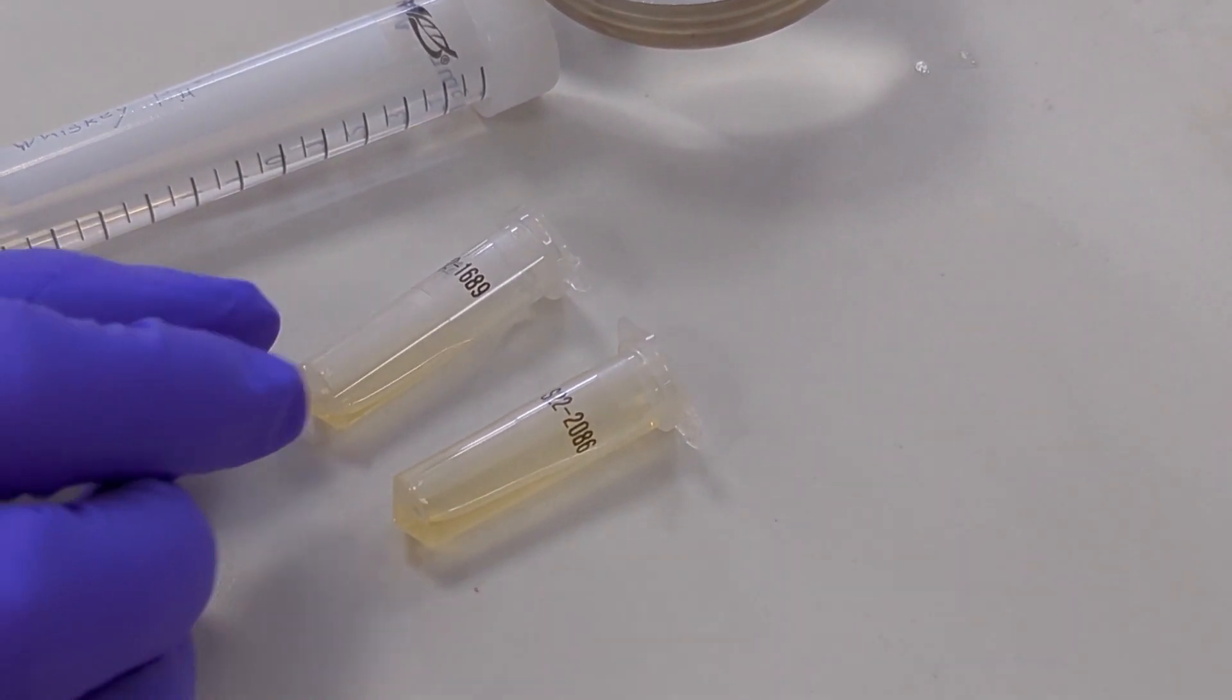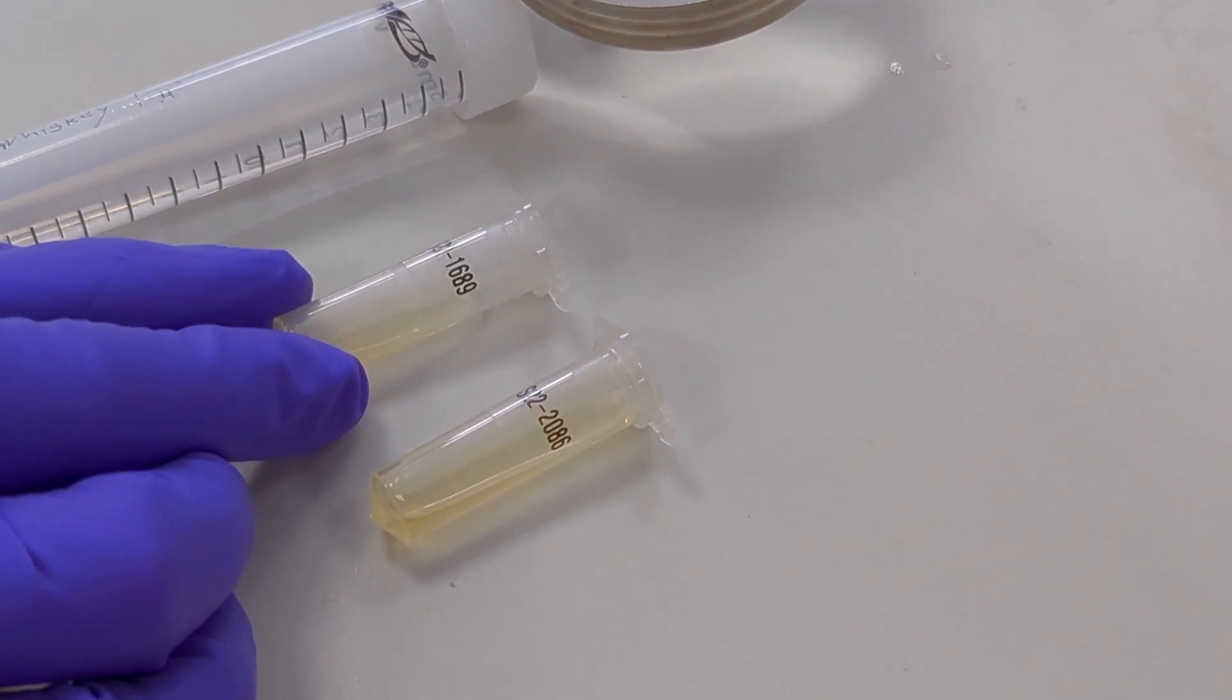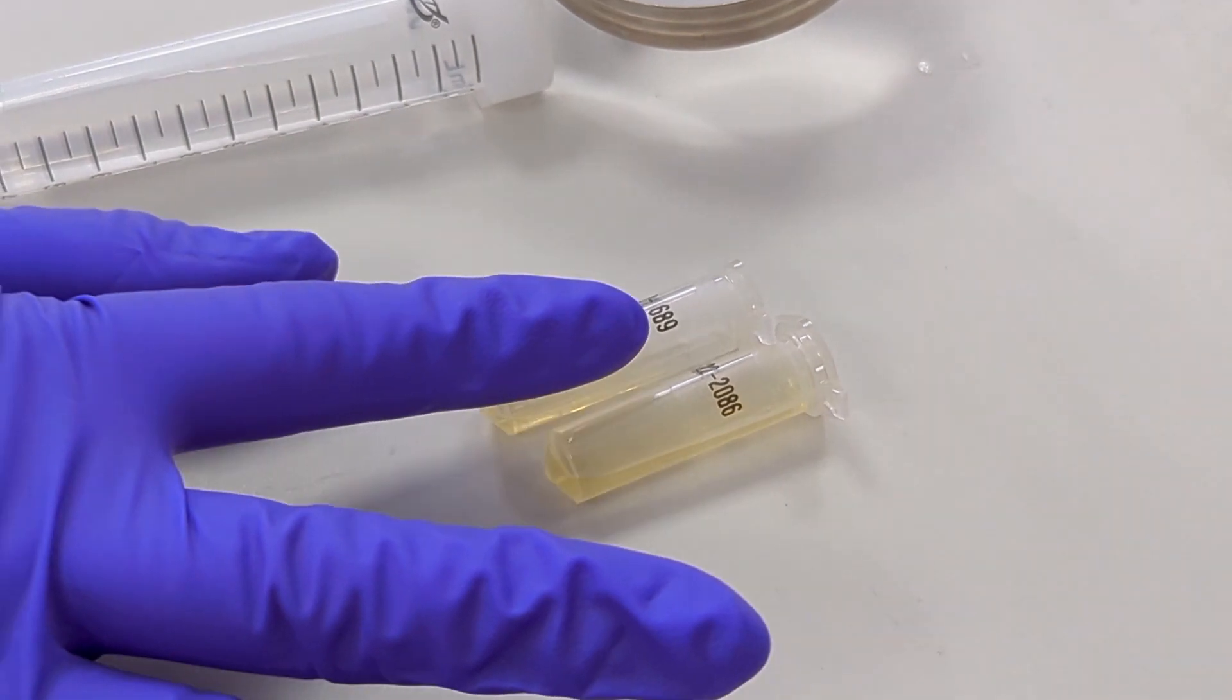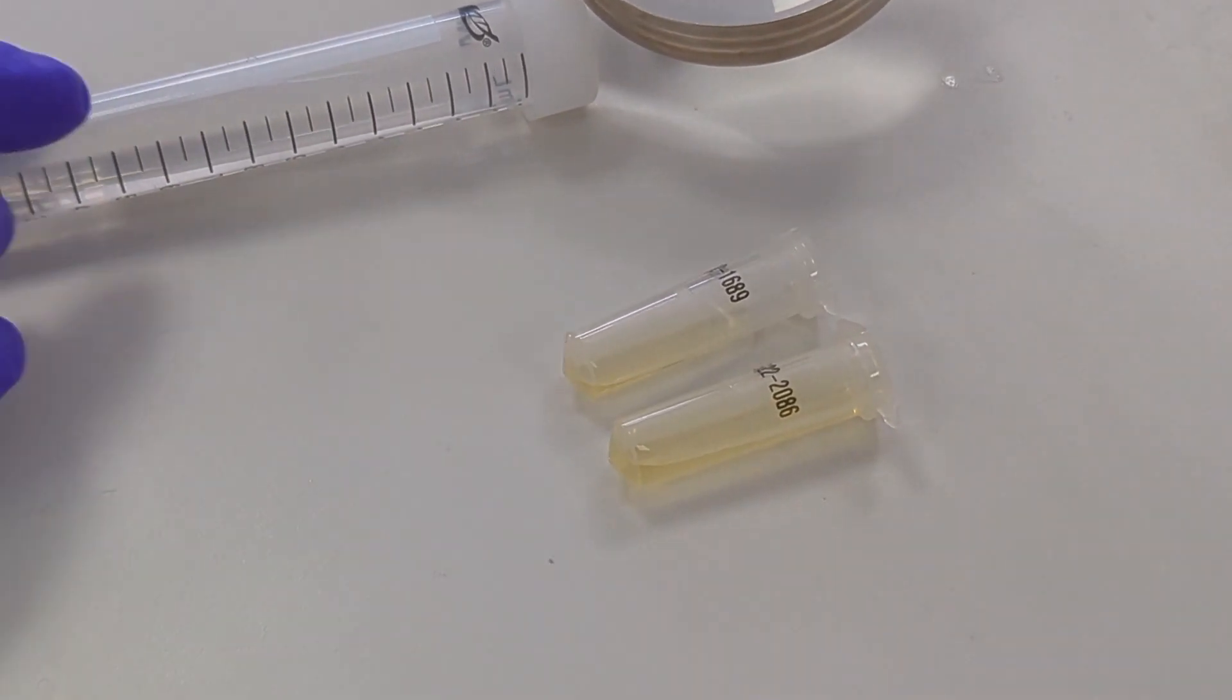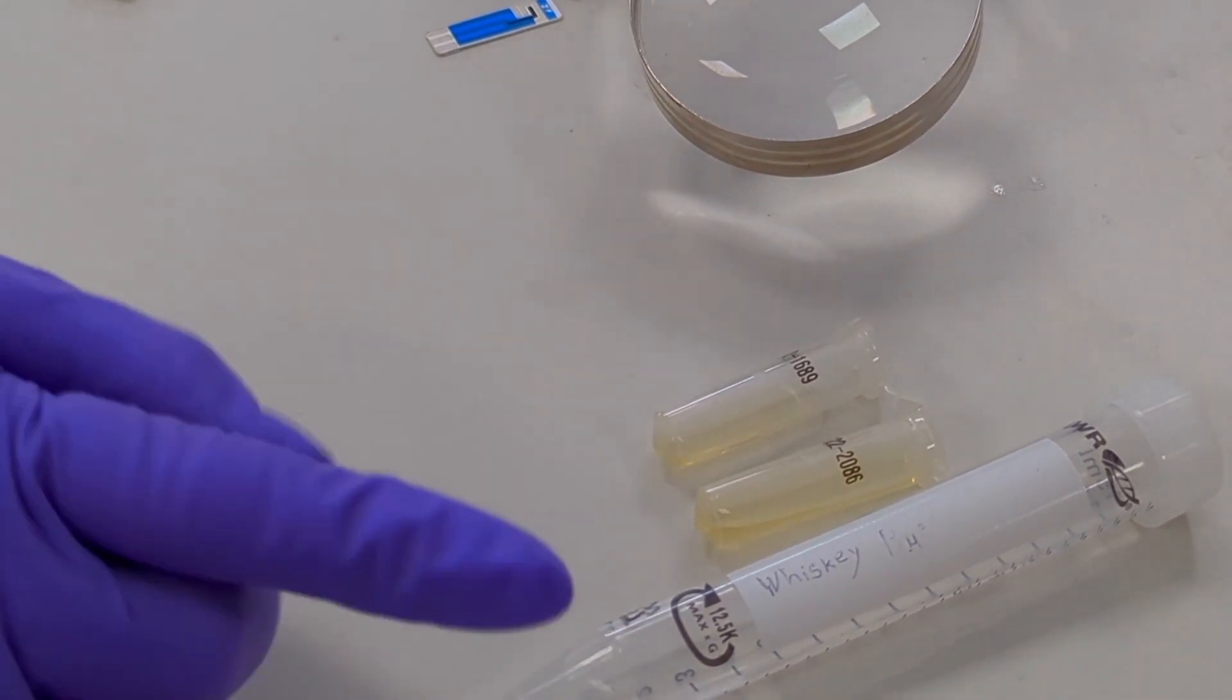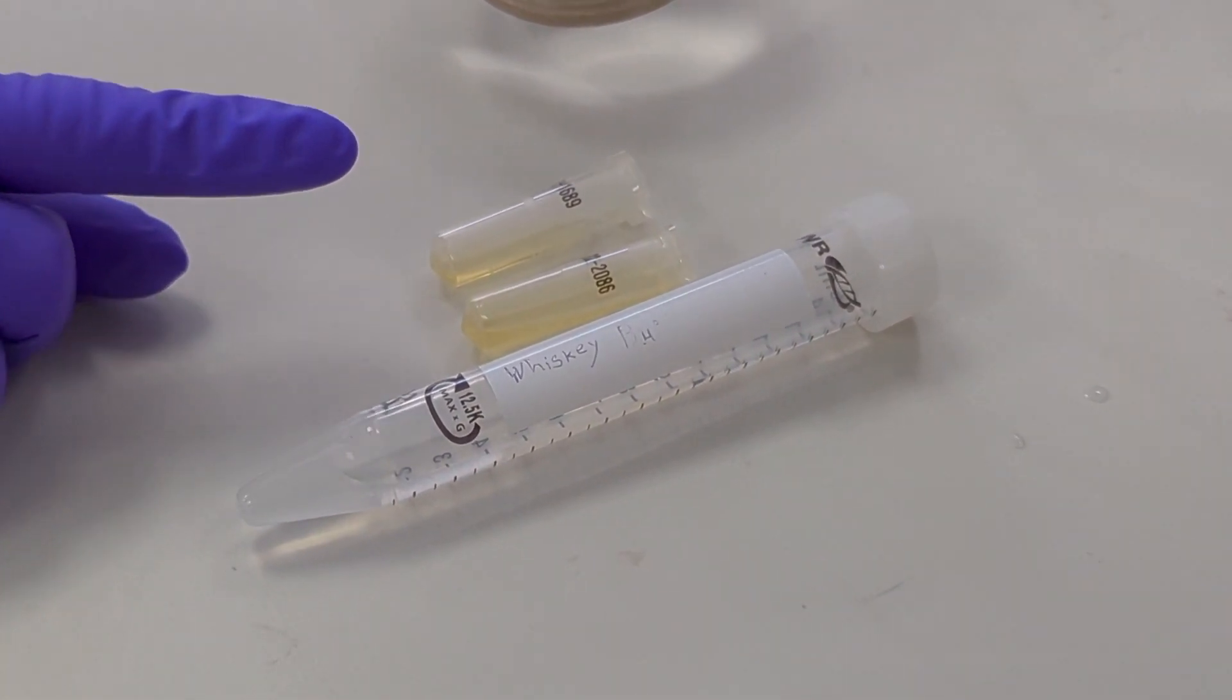Hi, today we have two whiskey samples, out of which one is genuine and the other one is adulterated whiskey. Now we don't exactly know which one's which until we test both of them on our sensors. We also have a whiskey buffer solution that we use to dilute the whiskies in order to test them.